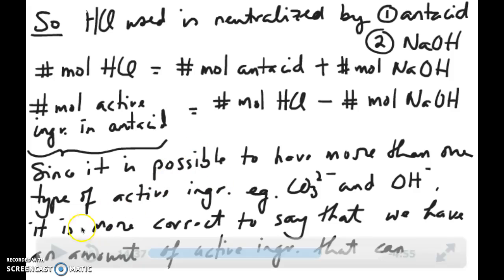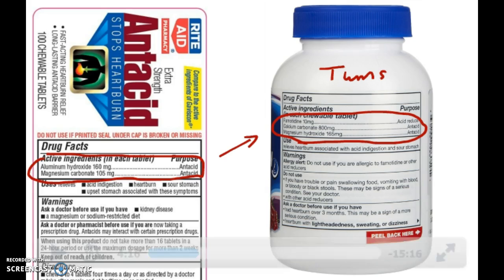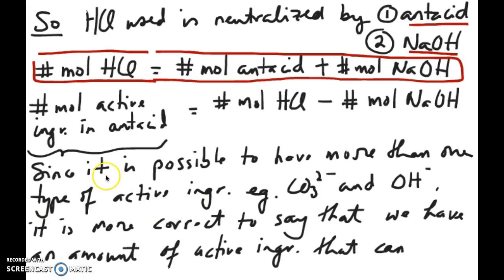And so the next thing we need to think about is as you saw in that bottle that I showed you earlier, the antacids all tend to have more than one active ingredient. In this one we have two active ingredients. So if that's the case we can't really say it's the number of moles of active ingredient because if we say number of moles we're really referring to just one active ingredient. Since we can have multiple active ingredients we're not going to use the term number of moles but we're going to use just a generic term called the amount of active ingredient.